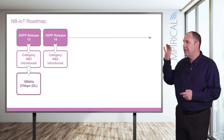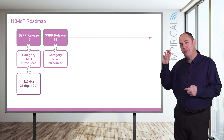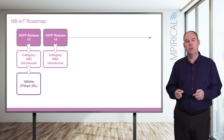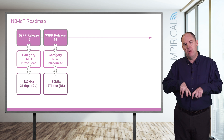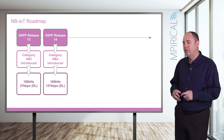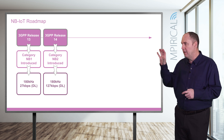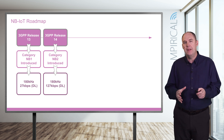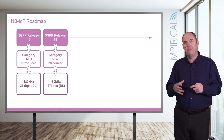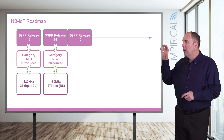In Release 14, various enhancements were introduced and the device was referred to as NB2, Narrowband Category 2. That introduced a lot more flexibility at the air interface in terms of transport options and how you code the information, which allowed an increase in the data rate — the peak rate jumps up noticeably. It's all about making it more efficient at the lower layers.